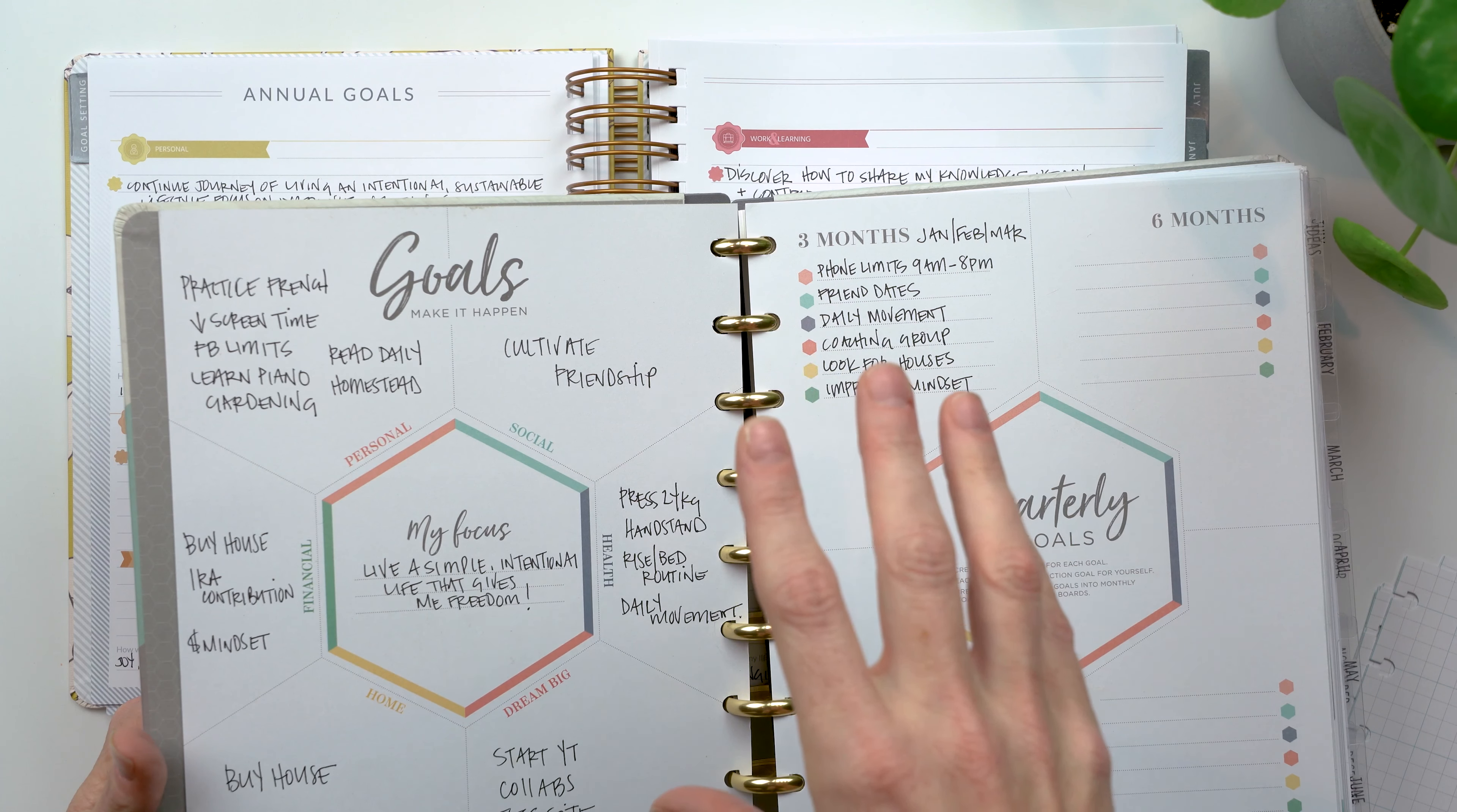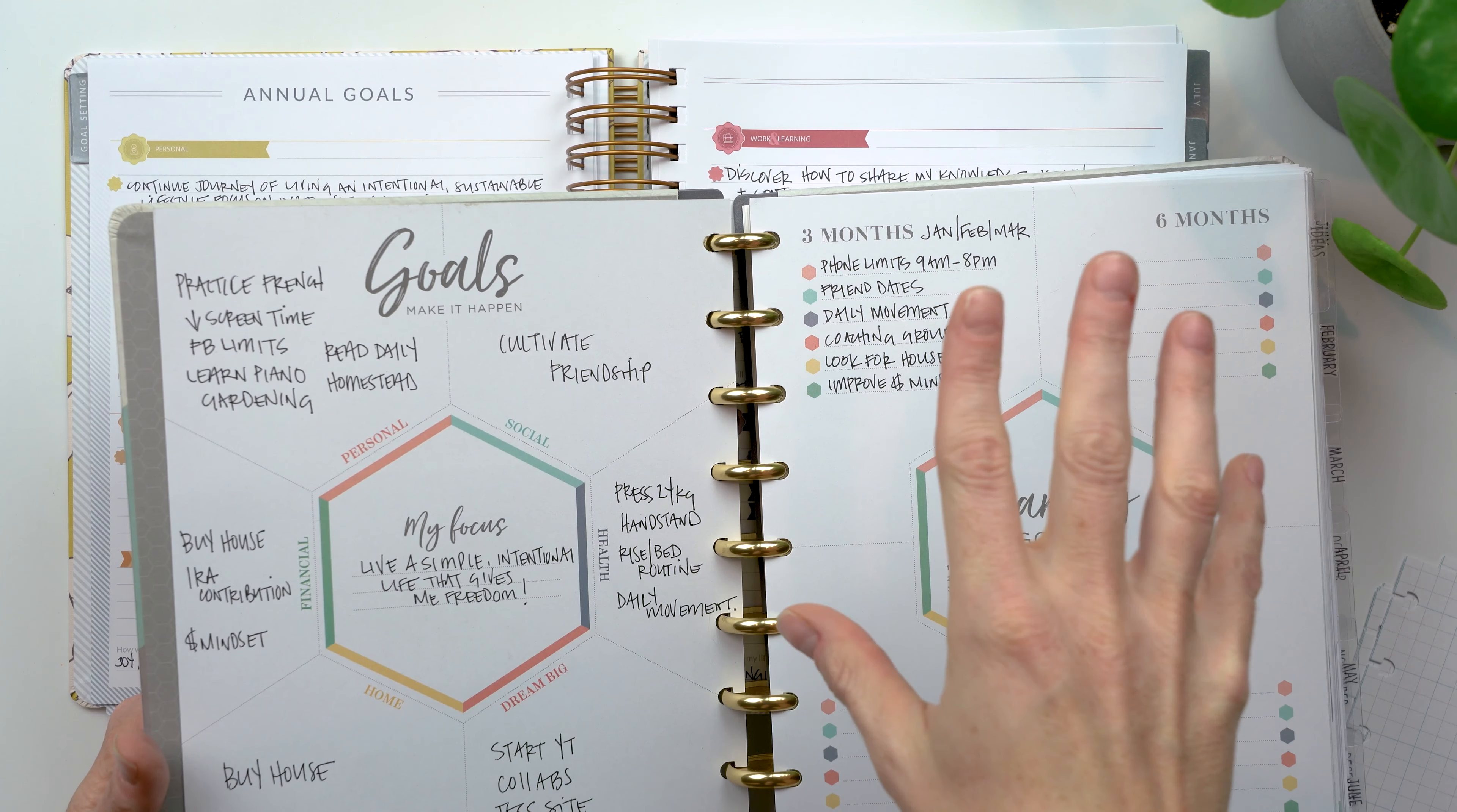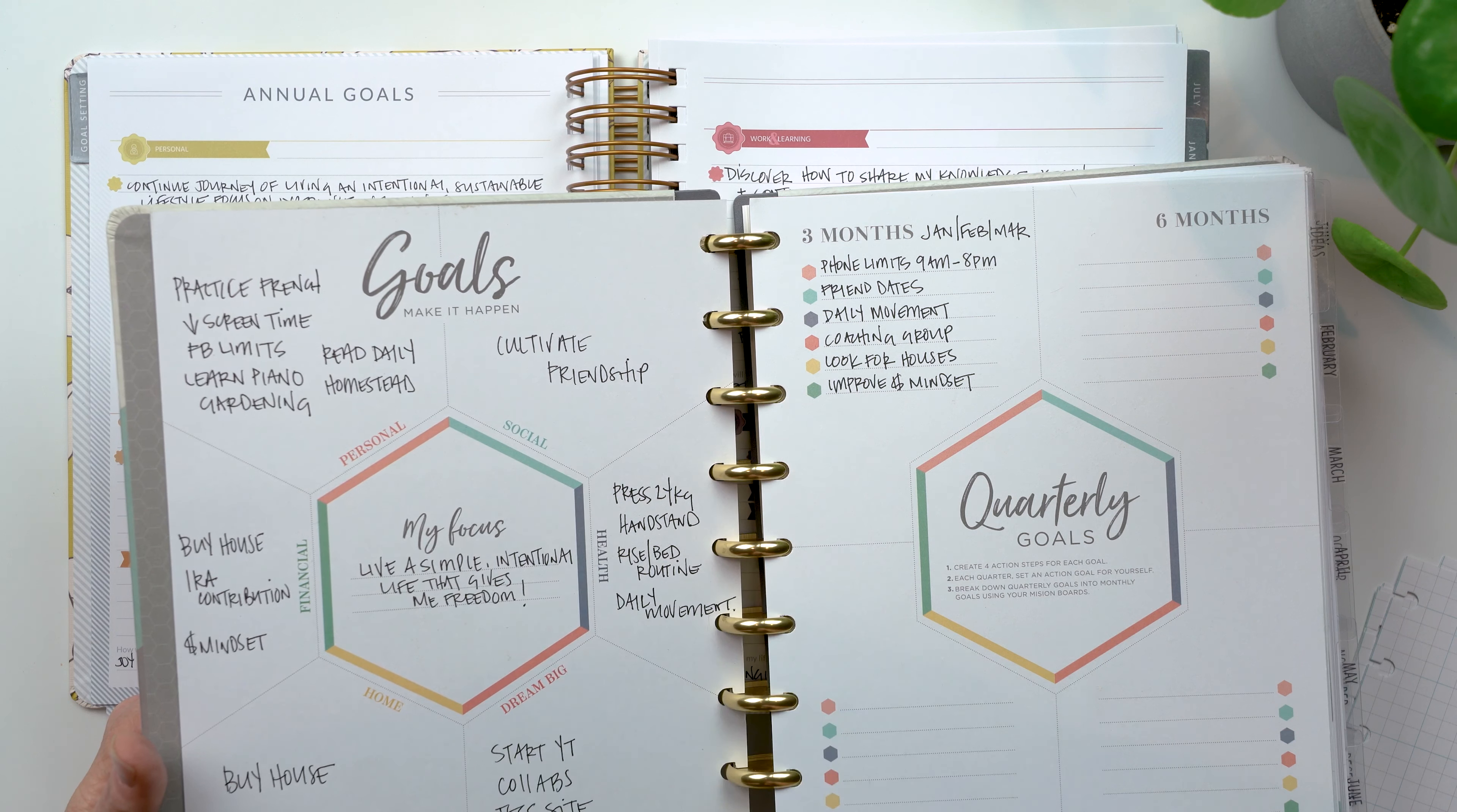So within these six areas, I think they're okay. You have personal, social health, dream big, home, and financial. I know a lot of people don't like dream big. They find that annoying, not useful to them. I think this maybe have been better served for work or business or something like that.